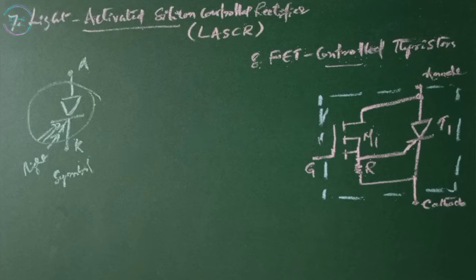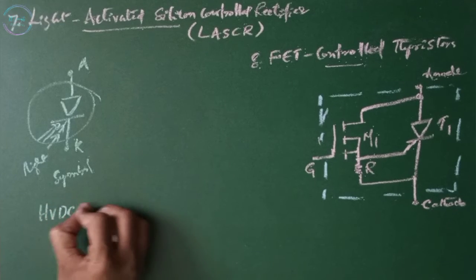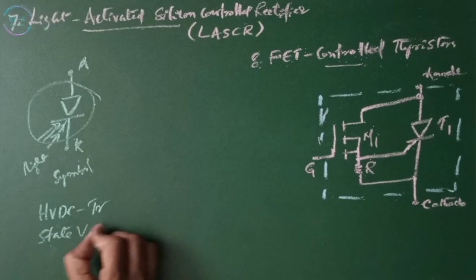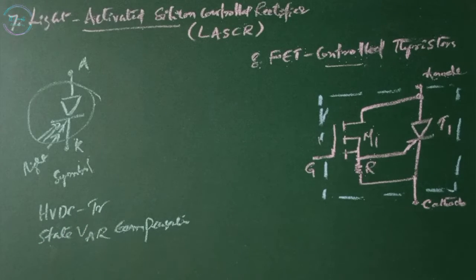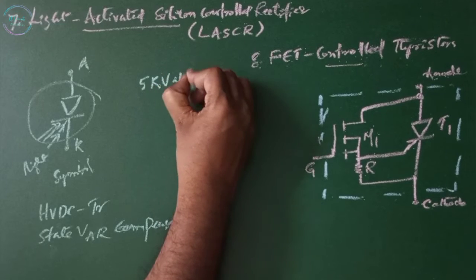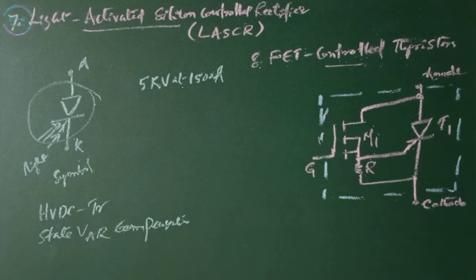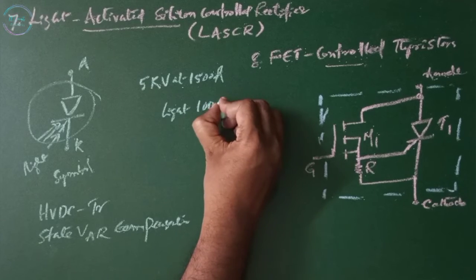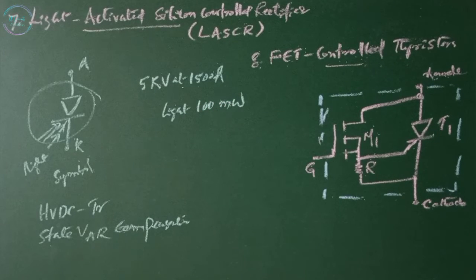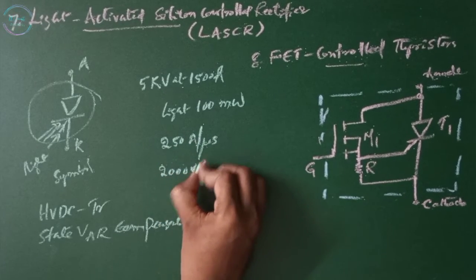The LASCRs are used in high voltage high current operations like HVDC transmission, static reactive power or static VAR compensation. A LASCR offers complete electrical isolation between the light triggering source and the switching device or power converter, which floats at a potential of as high as a few hundred kilovolts. The voltage rating of a LASCR could be 4 kV at 1500 amperes with light triggering power less than 100 milliwatts. The typical dI/dt is 250 amps per microsecond and dV/dt is 2000 volts per microsecond.